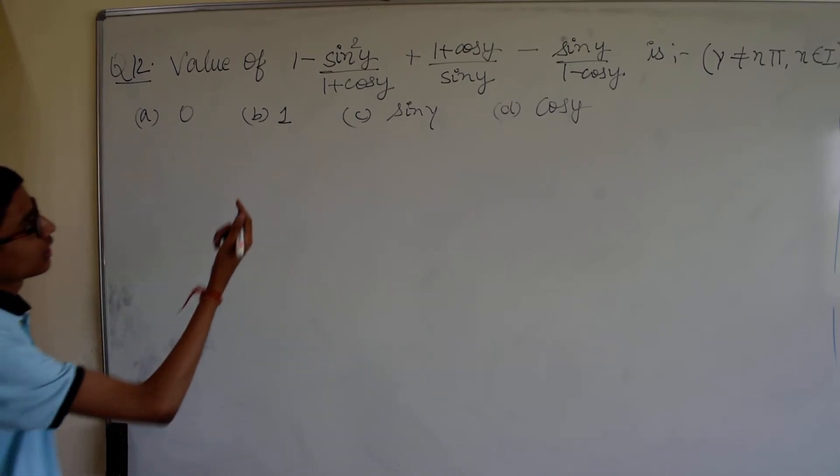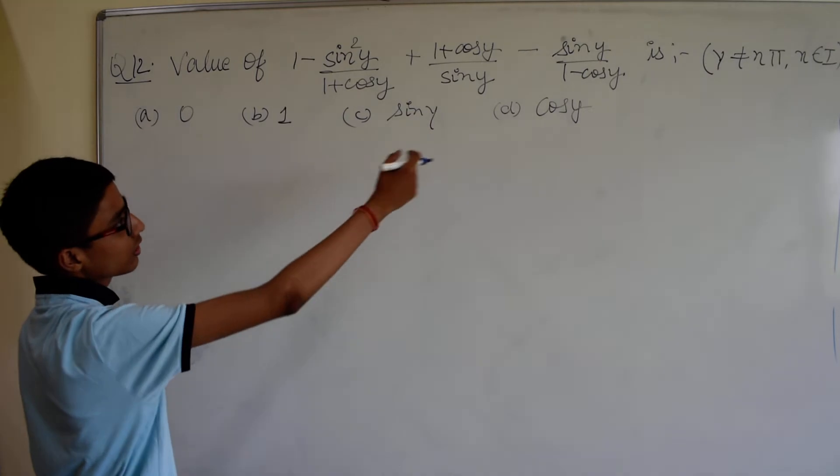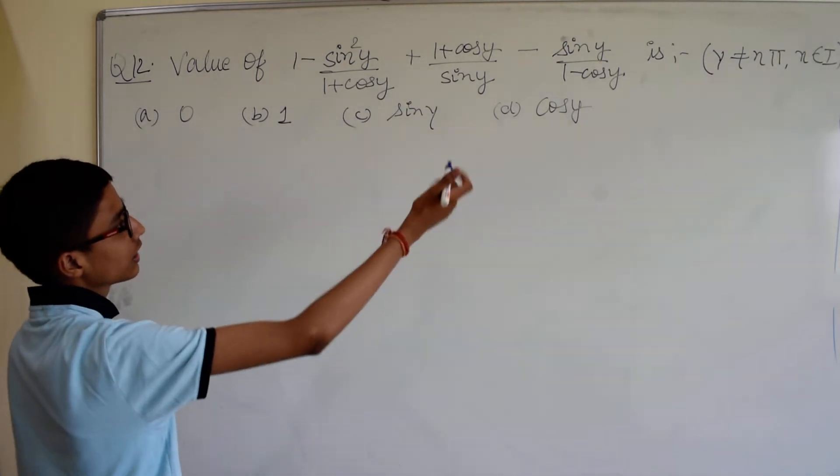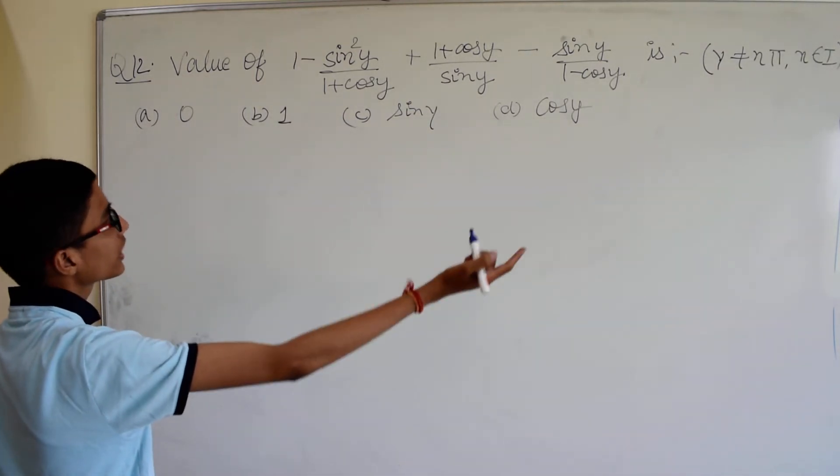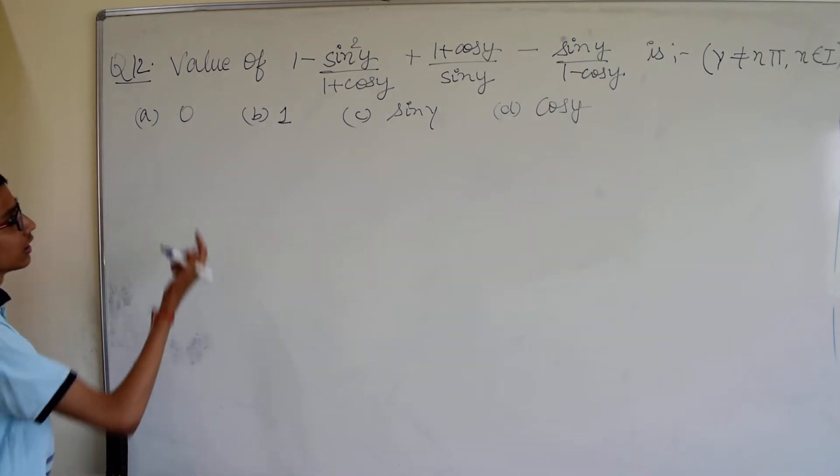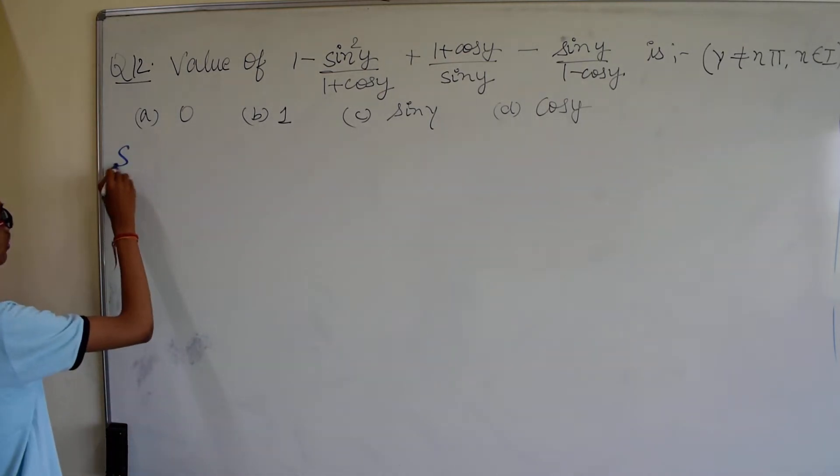Next question, question number 12. We are required to find the value of this expression for any value, but the only condition is y not equal to c, d equal to n, k, e. This expression is very fine, so very simple question.